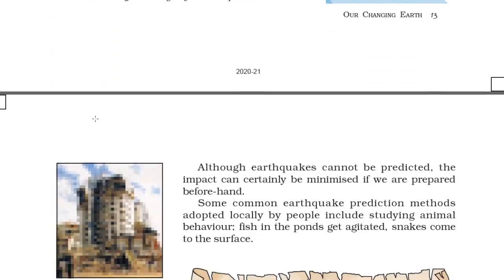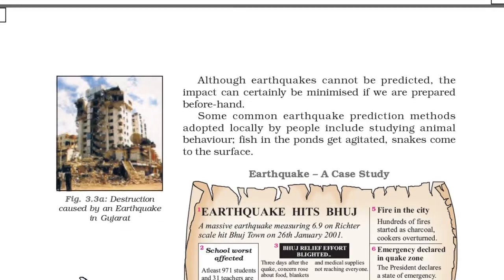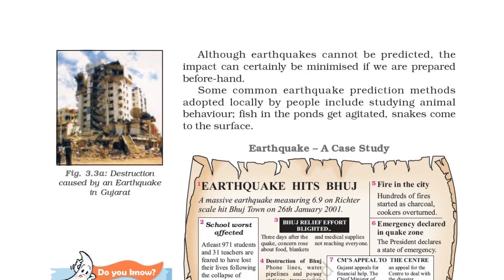Although earthquakes cannot be predicted, the impact can certainly be minimized if we are prepared beforehand. Some common earthquake prediction methods adopted locally by people include studying animal behavior — fish in ponds get agitated and snakes come to the surface.